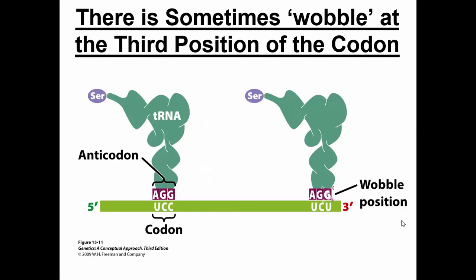This redundancy in the code actually results from something called the wobble effect. If we have our RNA strand here with this green line going 5' to 3', we have our codon, and we have our tRNA, which is bringing our amino acids. On the tRNA we have our anticodon, which is complementary to our codon. You'll notice a perfect pairing here — A with U, G with C, and G with C. However, sometimes the third base doesn't really matter. You'll get a pairing of an anticodon with a codon even if the third base is not exactly correct — here you see a U pairing with a G. That's the wobble effect, and it actually helps add to the redundancy of the genetic code.